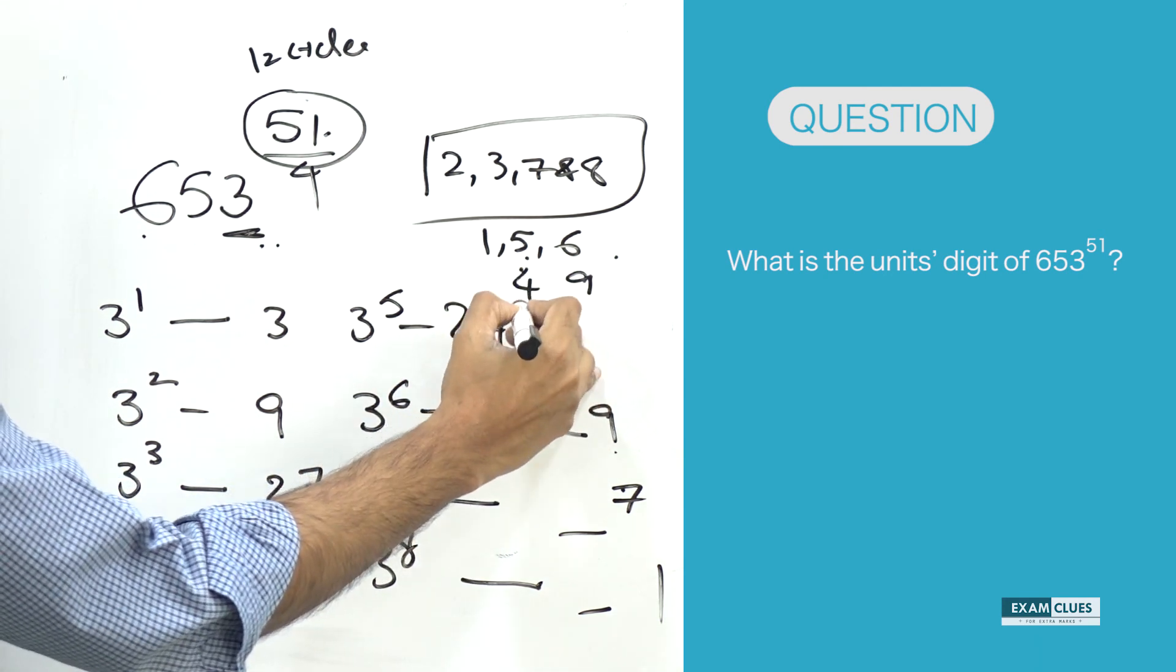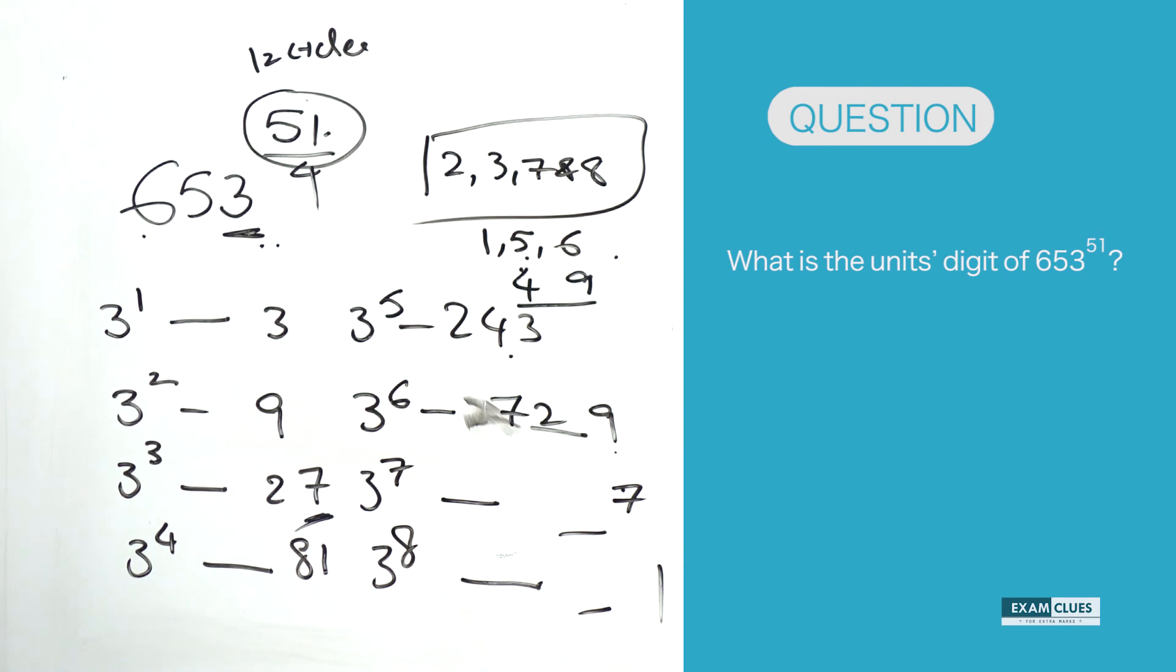Then you have 9 and 4 which have a cyclicity of 2. You people try to explore how it is. I trust all of you enjoyed this particular cyclicity concept. So now you can find what would be the last digit of any large number.